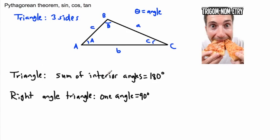We know something special about the sum of the interior angles of a triangle: angle A plus angle B plus angle C must equal 180 degrees. So if you know two of the angles and want to find the third, you can just calculate it from that.